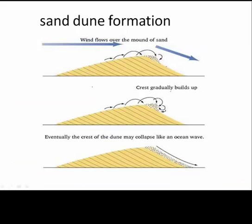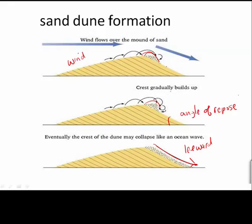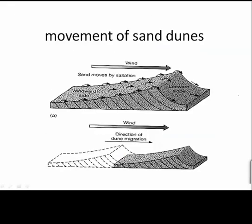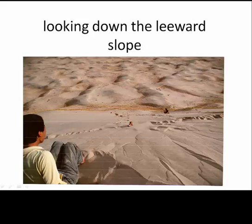As a sand dune forms, the sand hops up the windward side and builds up in a pile at the top. Finally the pile gets too steep and collapses as a small avalanche down the leeward side. The sand cannot support itself beyond a certain angle, called the angle of repose, which for sand dunes tends to be about 33 to 34 degrees. Sand dunes constantly move, with sand being taken from the windward side and falling down the leeward side, causing them to migrate downwind. You can sit on top of a sand dune, push your feet, and create an avalanche that moves like a liquid.